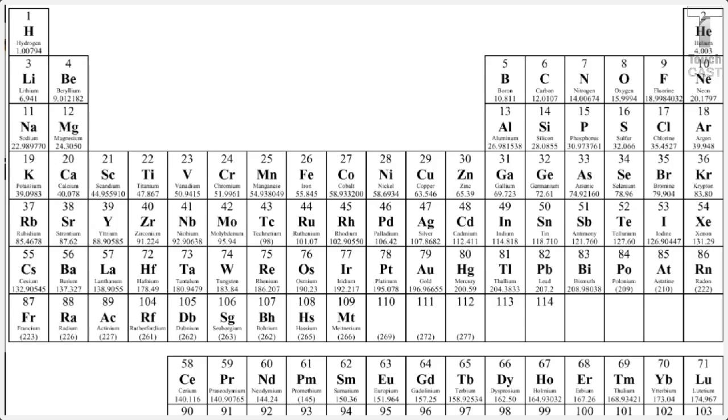Group 1 is called the alkali metals and all of these atoms have 1 valence electron. And as you can see, I have labeled the valence electrons for the groups in blue. So group 1 is the alkali metals. They have 1 valence electron. This means that the elements in this group will react similarly. Group 1 is the most reactive because these elements only have 1 valence electron to give away.